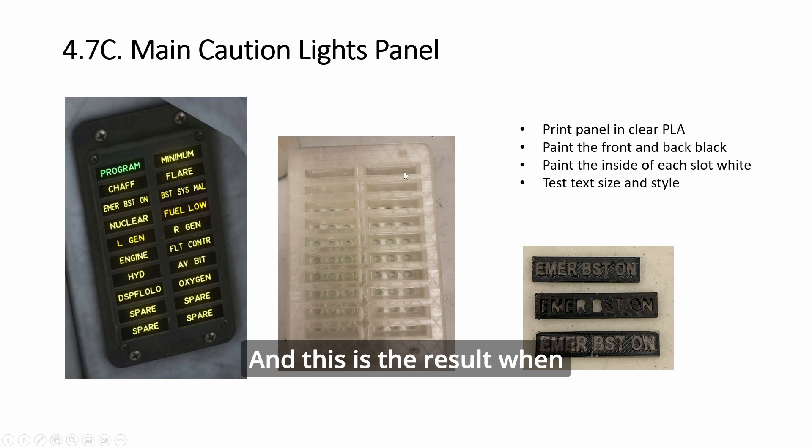And this is the result when it's printed clear. You print it clear because you want the lights in the LEDs inside to reflect when it's inside. So then you paint the top and the bottom black to prevent light bleed. But within it, you want it to bounce around white.